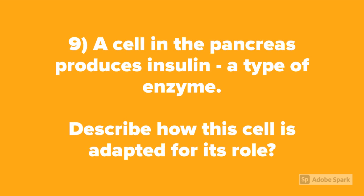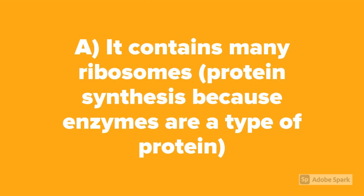Question number nine: A cell in the pancreas produces insulin, a type of enzyme. Describe how the cell is adapted for its role. The cell will contain many ribosomes to carry out protein synthesis, because enzymes are a type of protein.